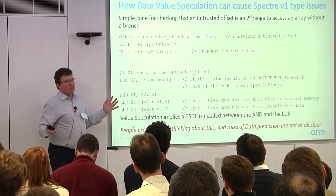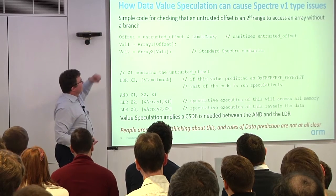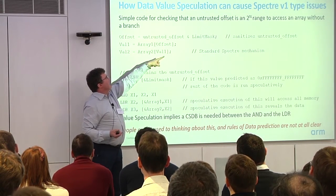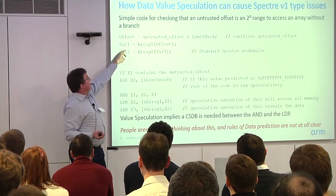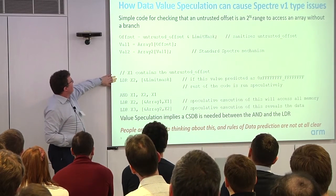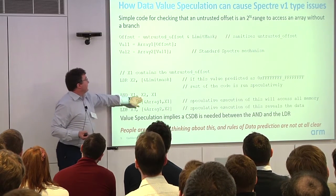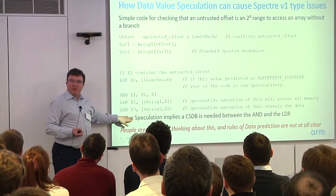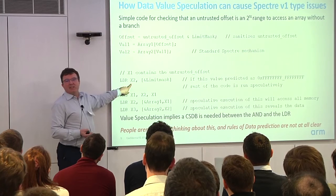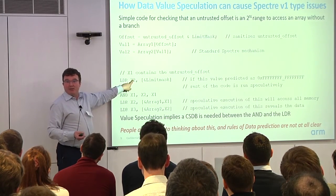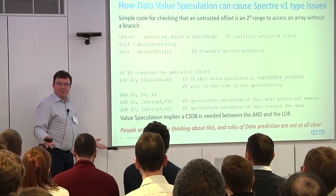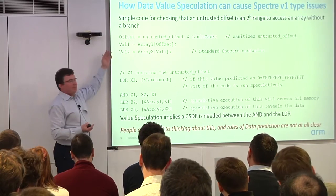When Spectre became public, some suggested stripping out conditional clauses and using a bitmask AND with the limit instead. But that's not Spectre-free either. That code compiles to a load of the limit mask, then an AND with the untrusted offset. Because that load takes time, value prediction kicks in and guesses the value of the load — guessing all 0xFFs — so the AND becomes a no-op, and you're back in Spectre-land. Value prediction makes this attack possible even when the developer thought they had mitigated it.